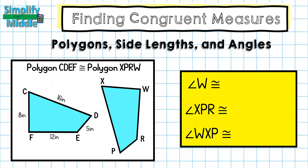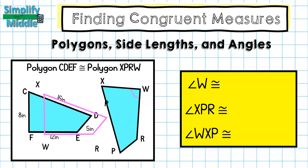Next, we're going to review how to find congruency between angles in a polygon using congruency statements. The measure of angle W is found here. I want to imagine flipping and turning that shape so it matches my original. W and F have the same angle measure because they are congruent. W is written last in the second polygon's congruency statement, and F is also written last in the first polygon. So the measure of angle W is congruent to the measure of angle F.